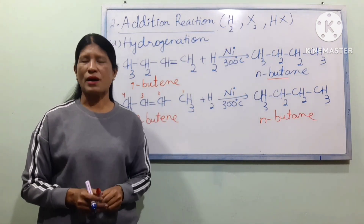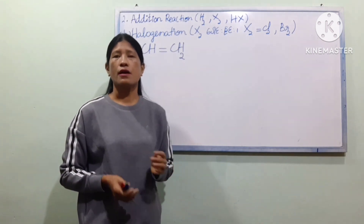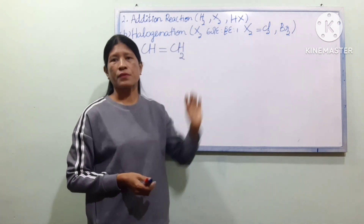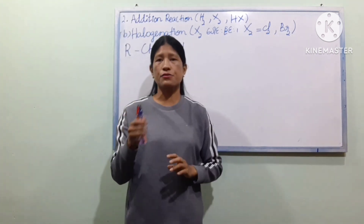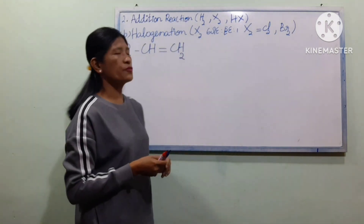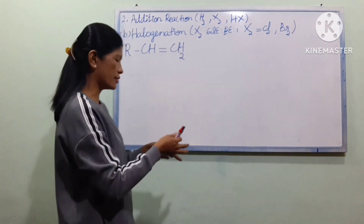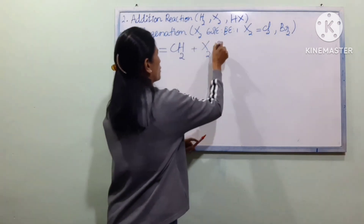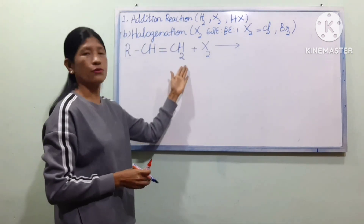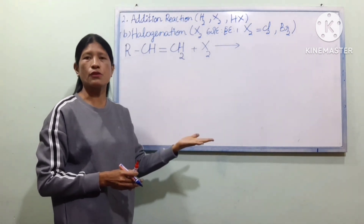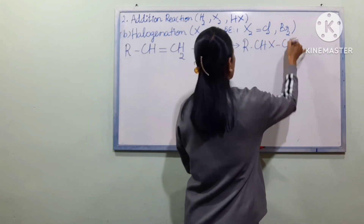The reaction is hydrogenation. Now for halogenation: in halogenation, we have the halogen X2. We use X2 and the alkene reacts with X2. The product of the reaction is R-CH(X) single bond CH2-X, where X is the halogen added across the double bond.